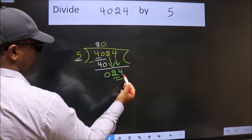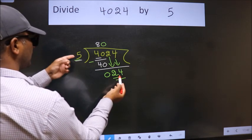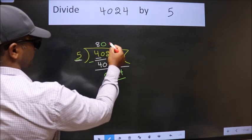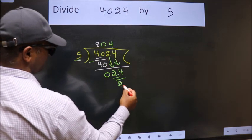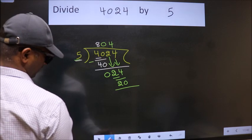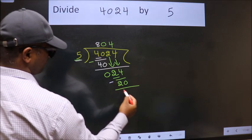So 24. A number close to 24 in 5 table is 5 fours, 20. Now we subtract. We get 4.